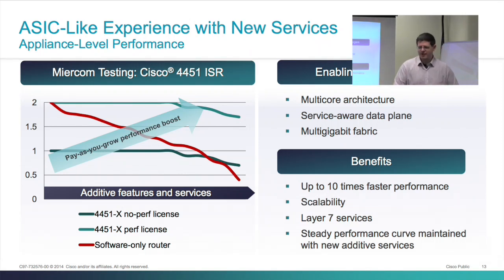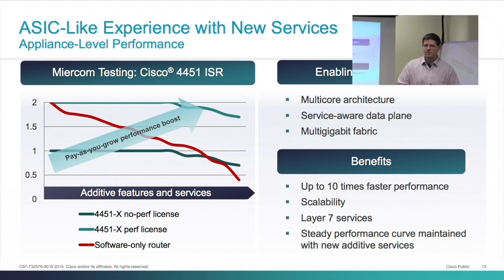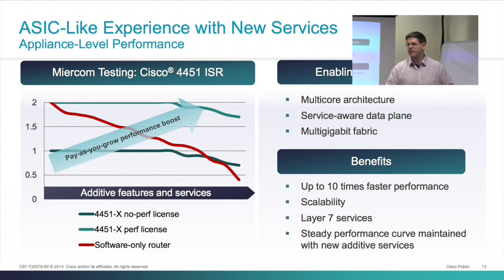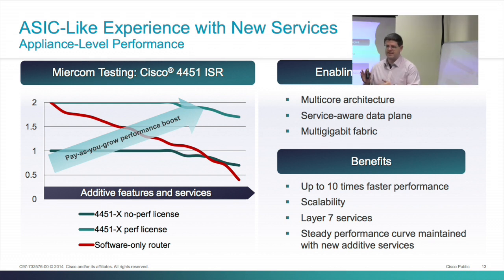This is a real performance graph from a Miercom report. Miercom is contracted — you pay them for the report — but they won't lie; you have to actually prove whatever they put in the report. With the 4451 launch, we asked them to write a report on the flat performance curve at one-gig and two-gig performance levels. You can Google 'Cisco 4451 Miercom' to find it easily. It shows a nice flat performance curve across a huge number of feature combinations and test cases.